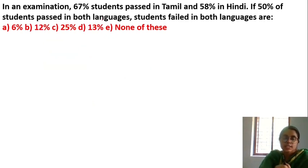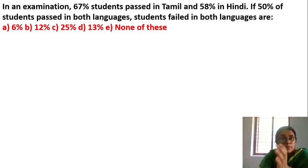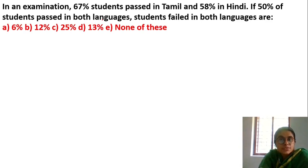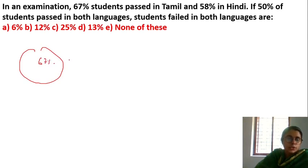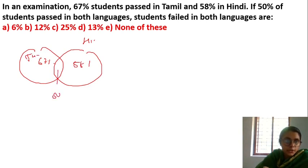In an examination, 67% of students passed in Tamil and 58% passed in Hindi. If 50% of the students passed in both languages, find the percentage of students who failed in both languages. Tamil passed is 68%, Hindi passed is 58%, both passed is 50%, so we give 10% only Tamil and 8% only Hindi.